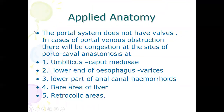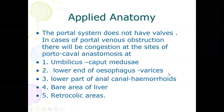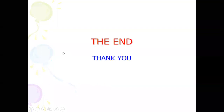For applied anatomy of the portal system: the portal system does not have valves. In case of portal venous obstruction, there will be congestion at the sites of portocaval anastomosis — the umbilicus, the veins of the esophagus causing varices, the lower part of the anal canal causing hemorrhoids, the bare area of the liver, and the retrocolic area. Thank you, I hope you enjoyed the presentation.